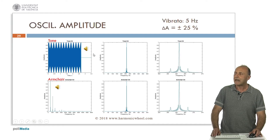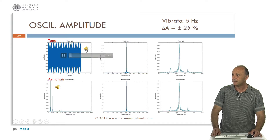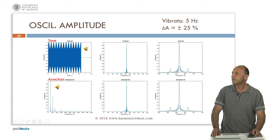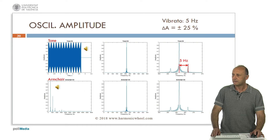Now let's consider an oscillating amplitude, that is a vibrato. In this case it is 5 Hertz in this direction, and the variation in amplitude is plus or minus 25% in this direction. Now the spectral line contains two small lines 5 Hertz apart — 5 Hertz because the vibrato was 5 Hertz. And in the case of the armchair, again we have several lines, each of them containing two small lines as in the case of the tone.